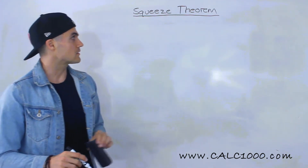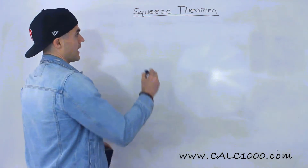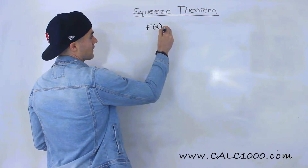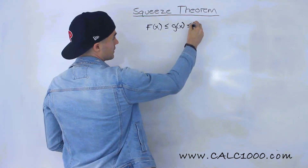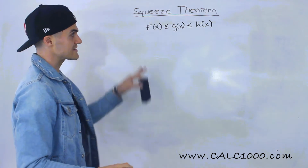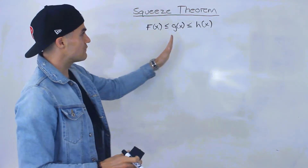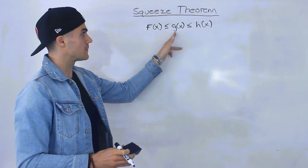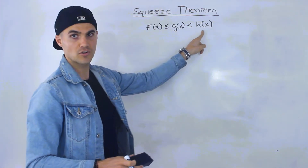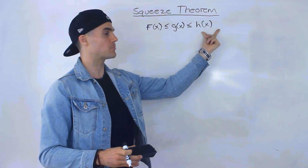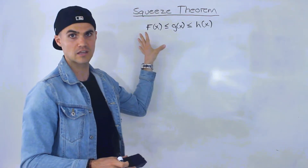To explain this theorem I want to introduce three functions: f of x, g of x, and h of x. The way that these functions relate is that f of x is always going to be less than or equal to g of x, which is going to be less than or equal to h of x. Basically, the y values of g of x always have to be greater than or equal to the y values of f of x, but less than or equal to the y values of h of x. So h of x is an upper bound for g of x, and f of x is a lower bound of g of x, for all x values in the entire domain.